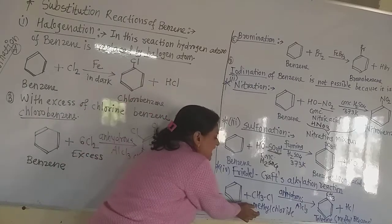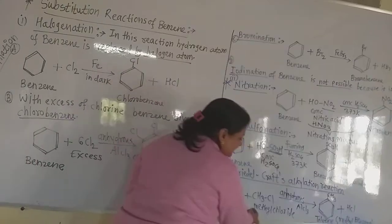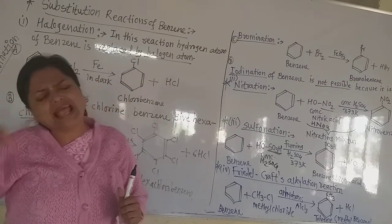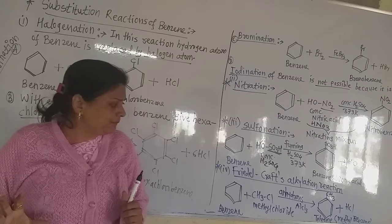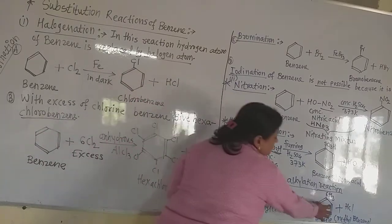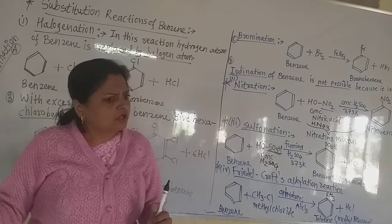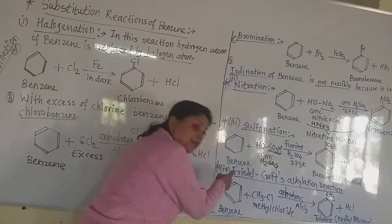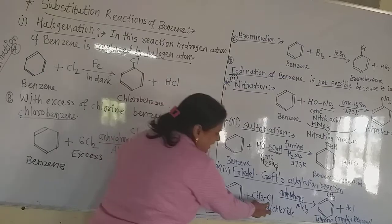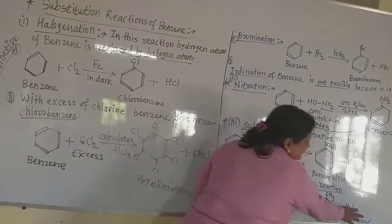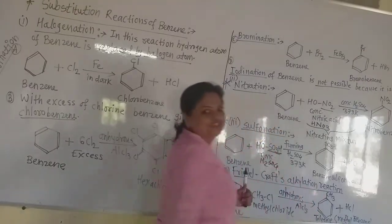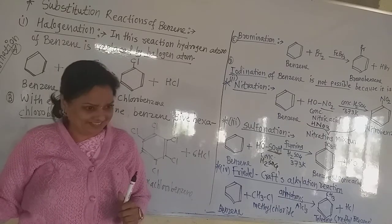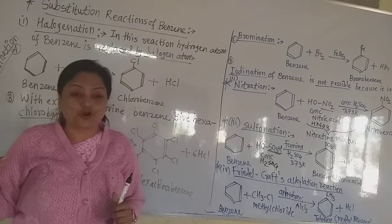Benzene reacts with alkyl halides — generally methyl chloride, but any alkyl halide can be used, such as ethyl bromide or propyl iodide. The difference is only which alkyl group gets introduced: with methyl chloride, a methyl group is introduced; with ethyl bromide, an ethyl group; with isopropyl iodide, an isopropyl group. The hydrogen atom of benzene and the chlorine atom form HCl as byproduct, and the methyl group gets introduced into the ring. The product is methylbenzene, commonly called toluene.